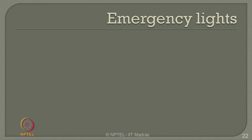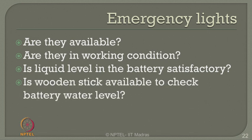Power shuts off during emergencies or accidents, so let us consider emergency lighting. Are emergency lights available in the plant? Are they in working condition? Do not take for granted that emergency lights placed in position are in working condition. The battery should be in recharge mode. The emergency light tube should be properly placed and locatable. Check whether they are in proper working condition. Is the liquid level in the battery satisfactory? This is a very important check which is most commonly ignored. Is a wooden stick available to check the battery level?